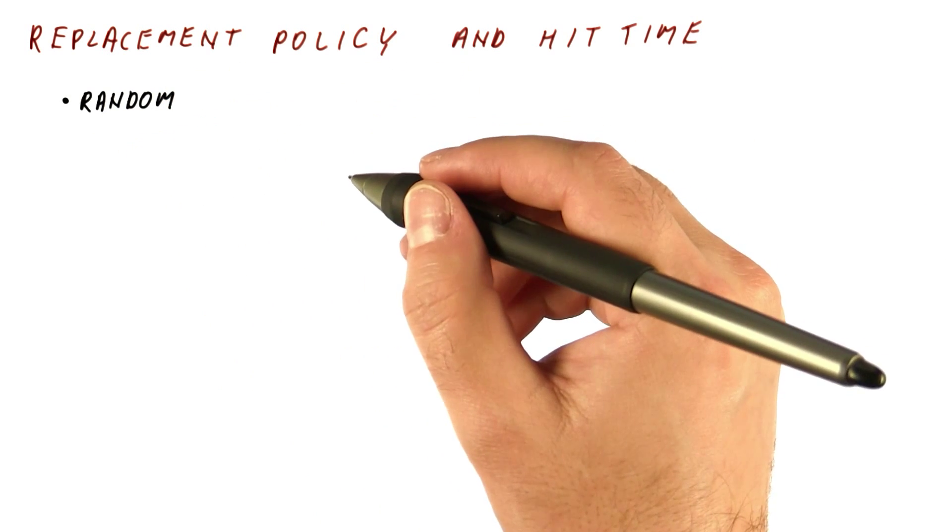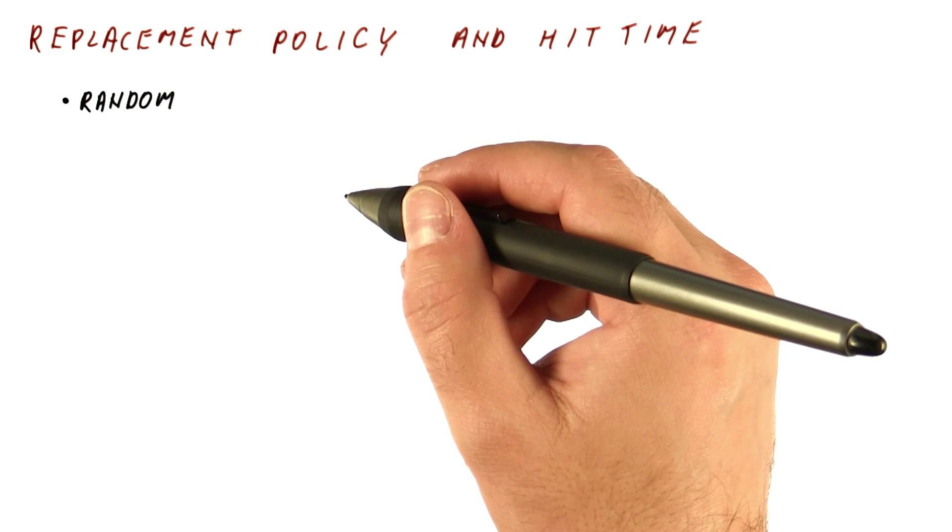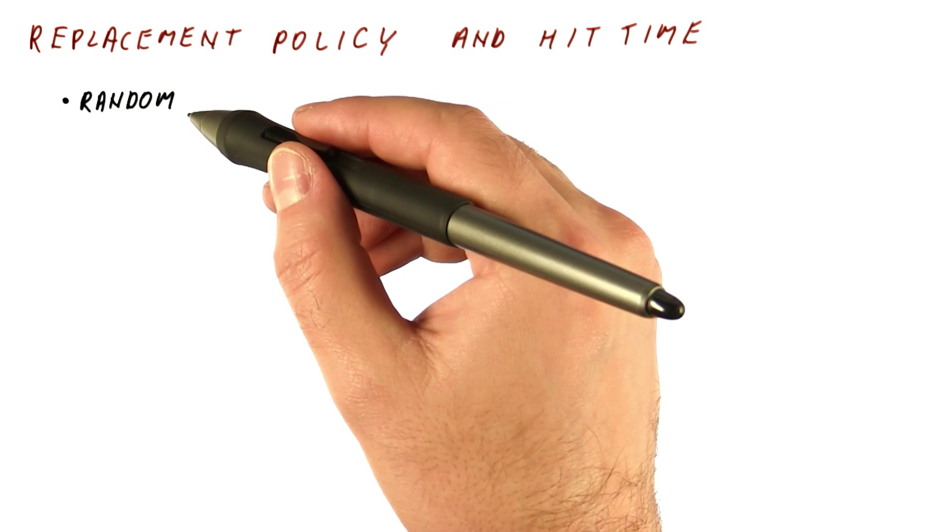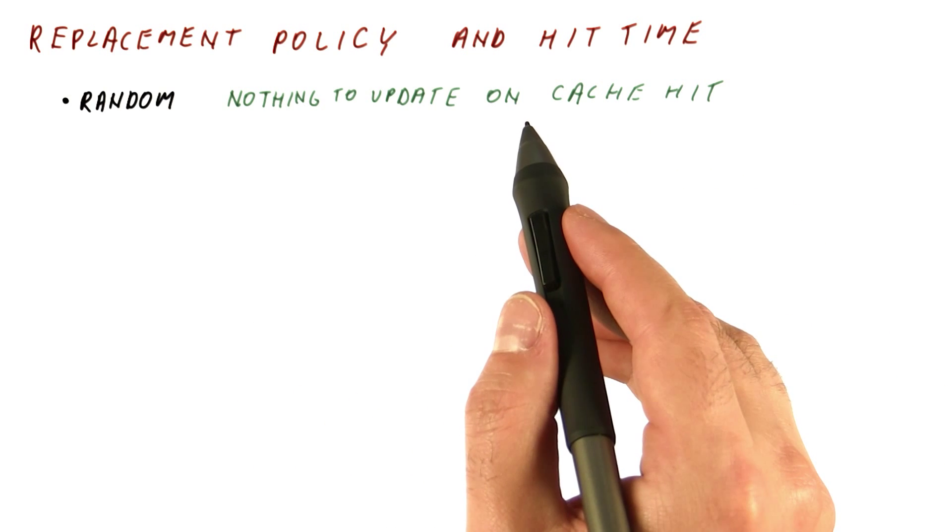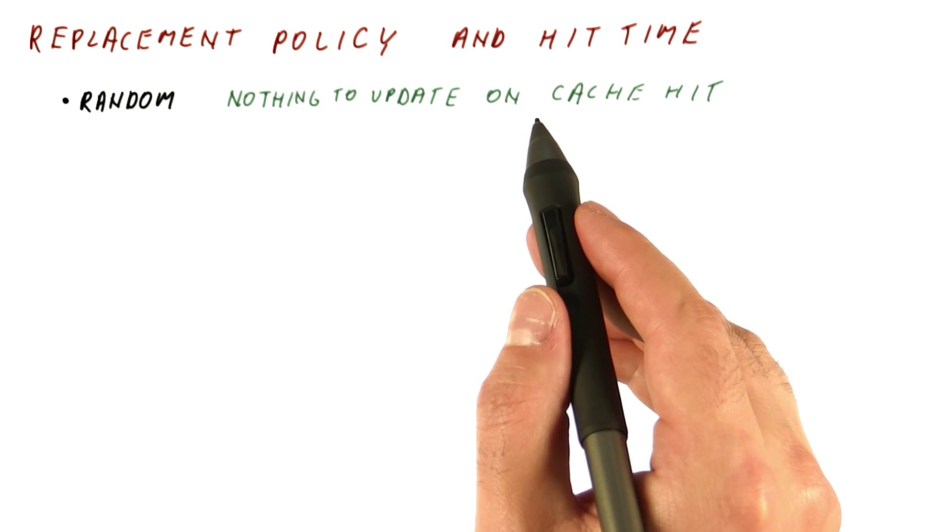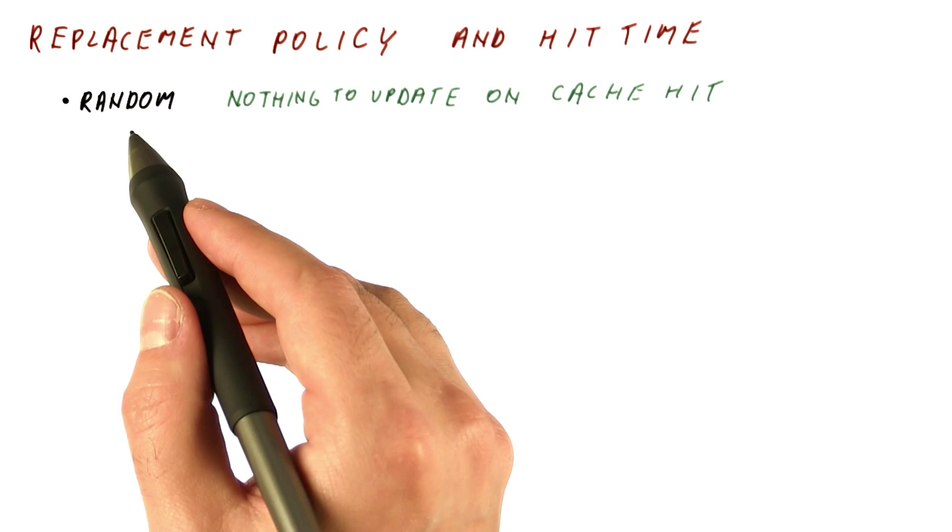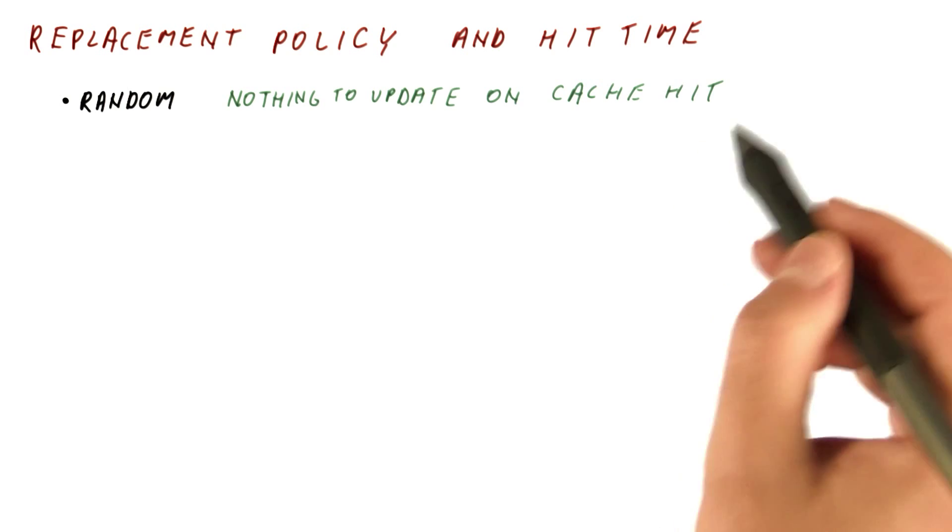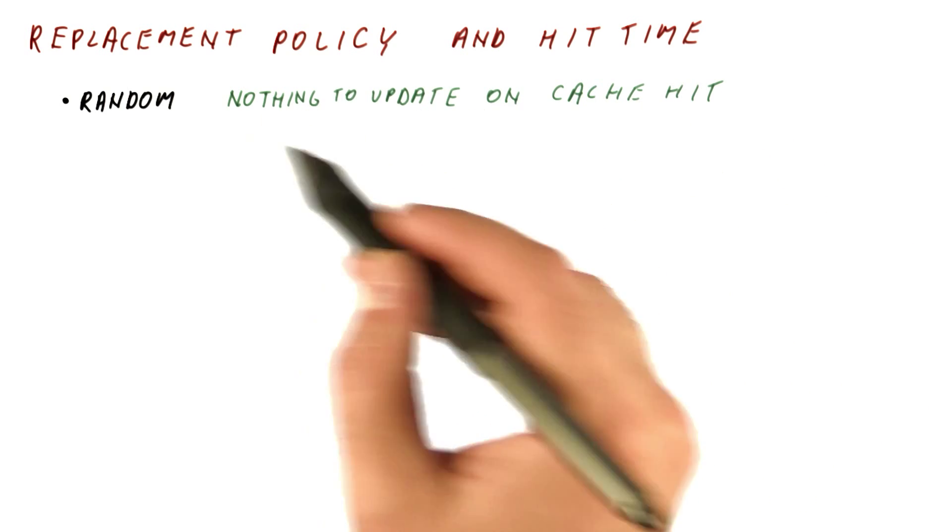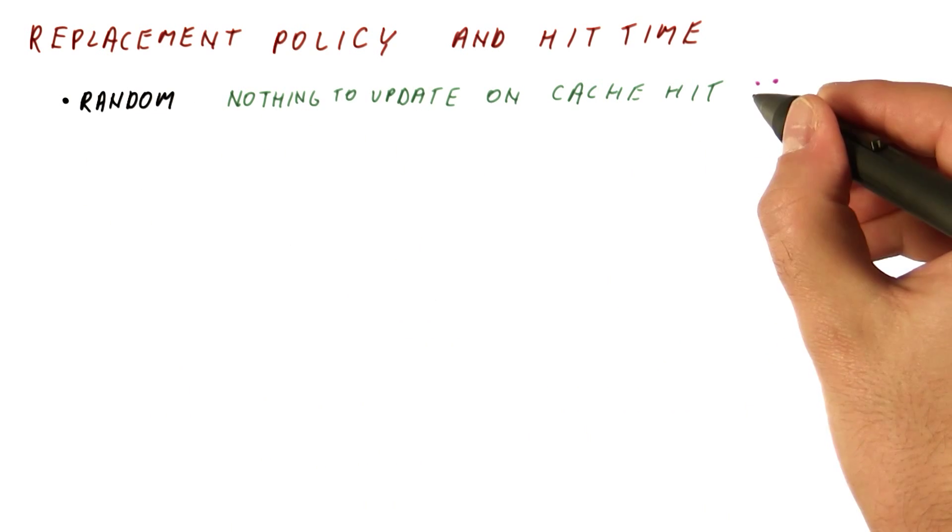A simple replacement policy, such as random, which randomly picks the block to replace among those that are in the set, has nothing to update on a cache hit. When we have a cache hit, we don't have to do anything in order to be later able to do random. This results in faster hits, because there is nothing we need to do for the replacement policy when we have a hit, and that's nice.